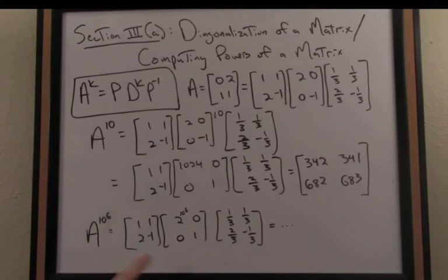Negative 1 to an even power is just going to be positive 1, so really I just need to ask the computer what's 2 raised to the 10 to the 6th or to the millionth power. Certainly a computer can do that with not too much problem, and then I'm going to multiply by P and P inverse on the left and the right.